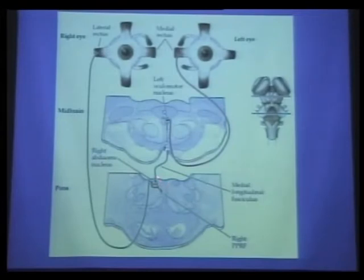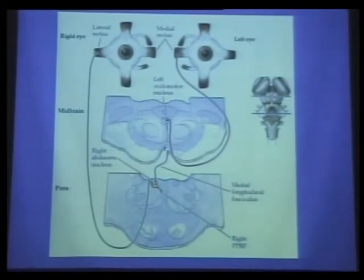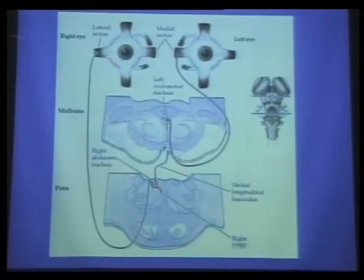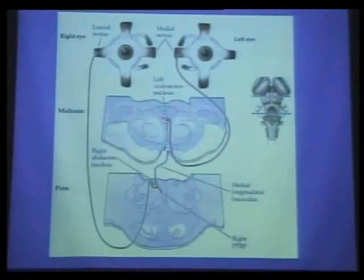The nucleus has to talk to the muscles—that is the infranuclear pathway. Everything above that is the supranuclear pathway. Anything between the two nuclei talking to each other—for example, the sixth nerve nucleus talking to the contralateral oculomotor nucleus—is the internuclear pathway. When we want to make our eyes go to one side, the lateral rectus fires via the abducens nucleus, which communicates with the contralateral medial rectus nucleus. That interneuron is called the medial longitudinal fasciculus.